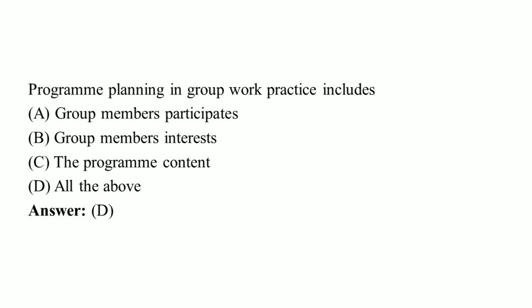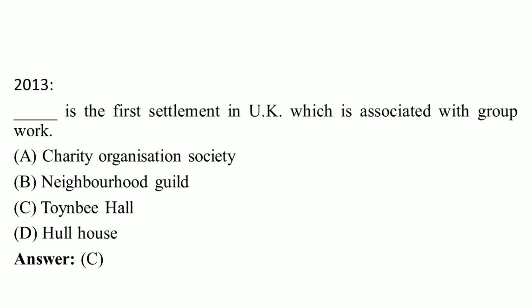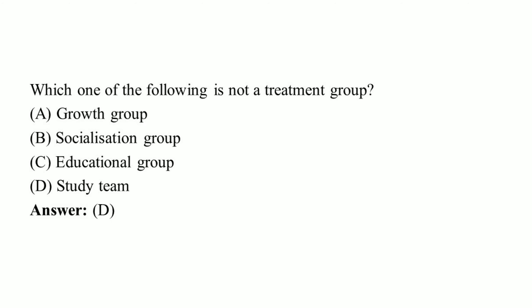Program planning in group work practice includes: option A, group members' participation; option B, group members' interest; and option C, the program content. Right answer: D, all of the above. Next questions are from 2013. Which is the first settlement in UK associated with group work? Right answer: option C, Toynbee Hall. They asked this question in 2012 also — they repeatedly asked the same question.